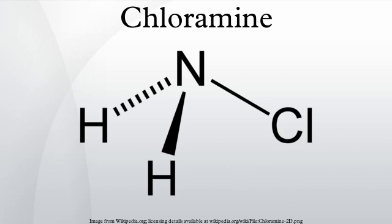Monochloramine is an inorganic compound with the formula NH2Cl. It is an unstable colorless liquid at its melting point of -66 degrees Celsius, but it is usually handled as a dilute aqueous solution, in which form it is sometimes used as a disinfectant.